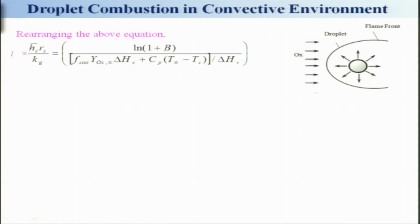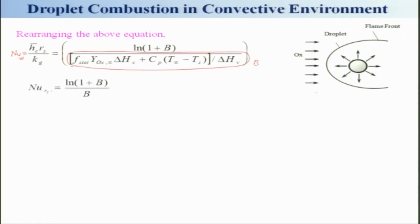If you look at this, it is nothing but the Nusselt number based on the radius at the surface of the droplet. And if you look at this term, it is basically B. So therefore, I can get Nu_rs = ln(1 + B) / B, where B is the transfer number. For combustion we write B_c; for evaporation it will be different. And this is basically what we have looked at — some kind of simplified way of looking at it.